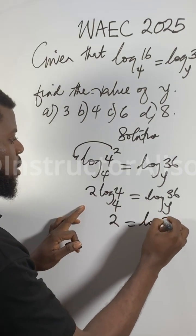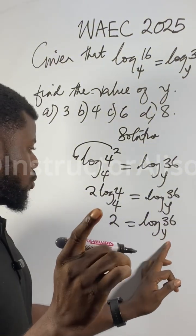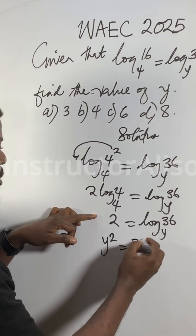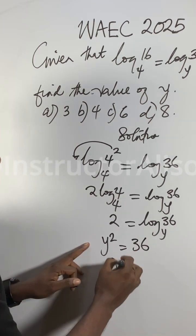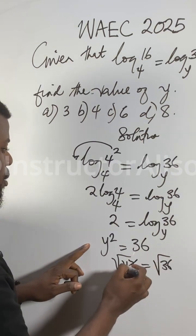And so we get 2 equals log 36 base Y. According to the rule of logarithms, this will become Y to the power of 2 equals 36. To get Y, I will just take the square root of both sides of the equation. This and this will cancel.